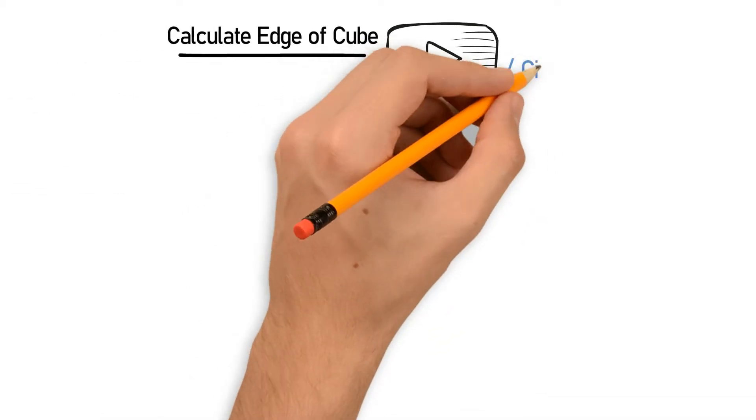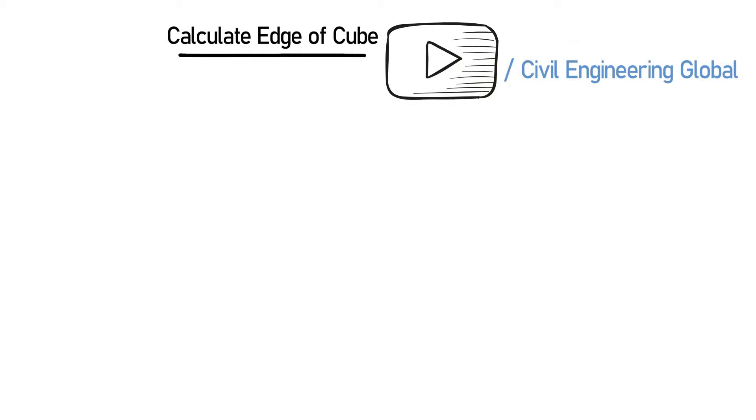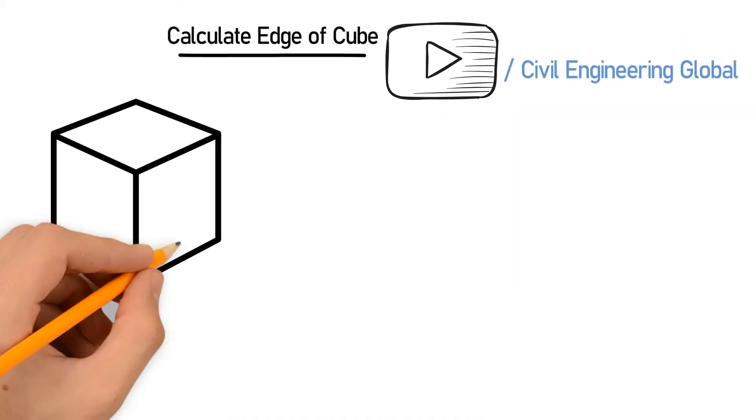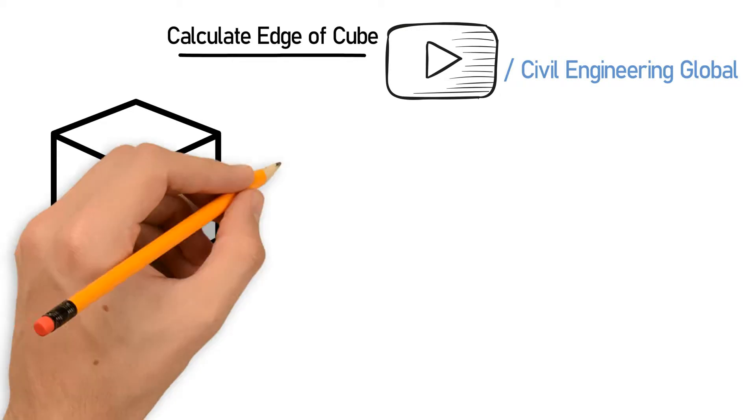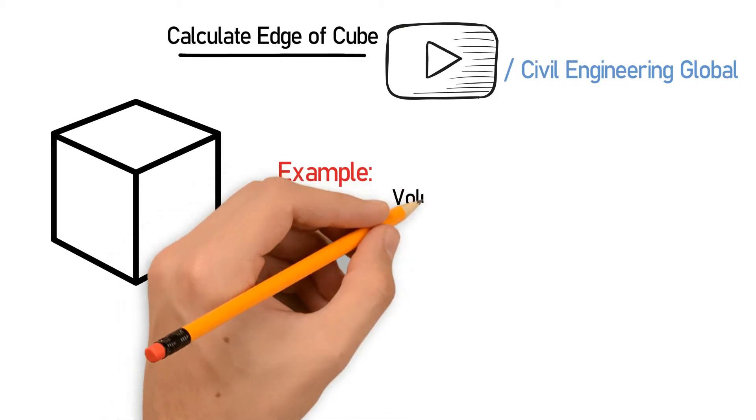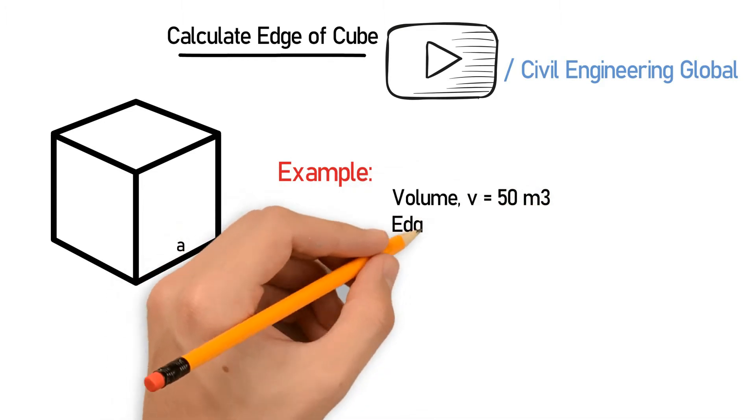Civil Engineering Global. Let's draw a cube first. This is an edge. So in this example, we will take volume v = 50 m³ and edge a = unknown. We have to find the edge.